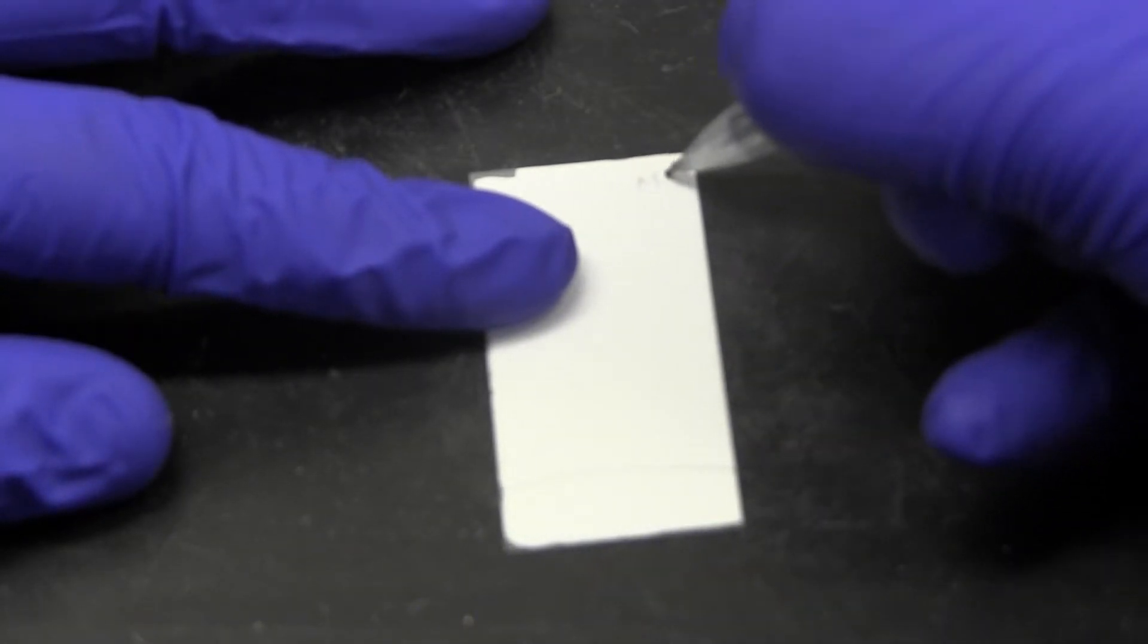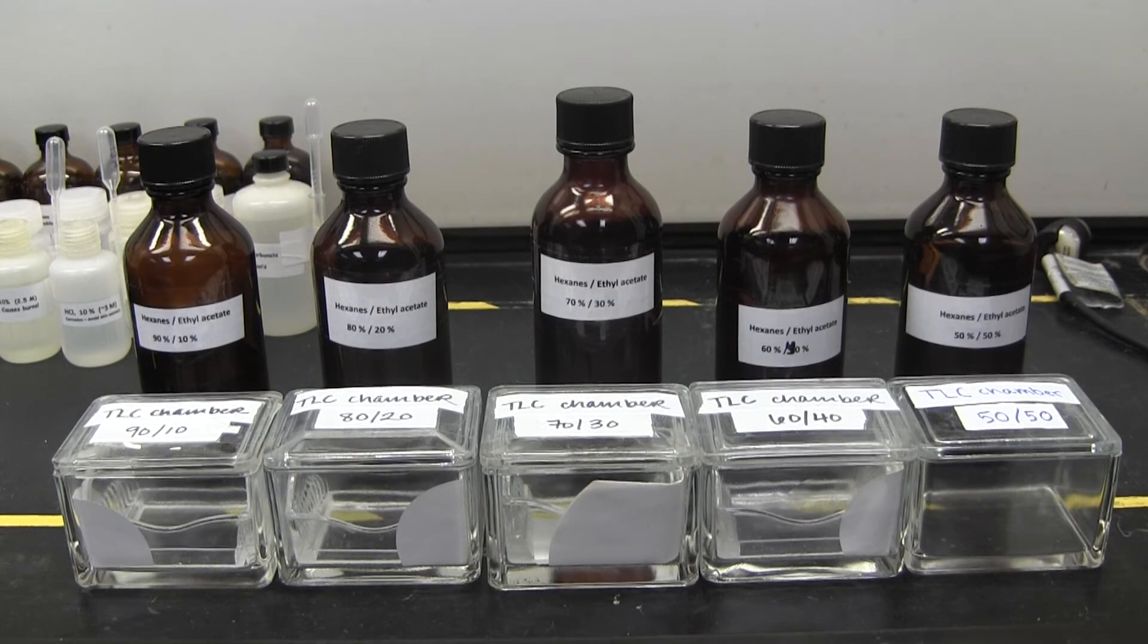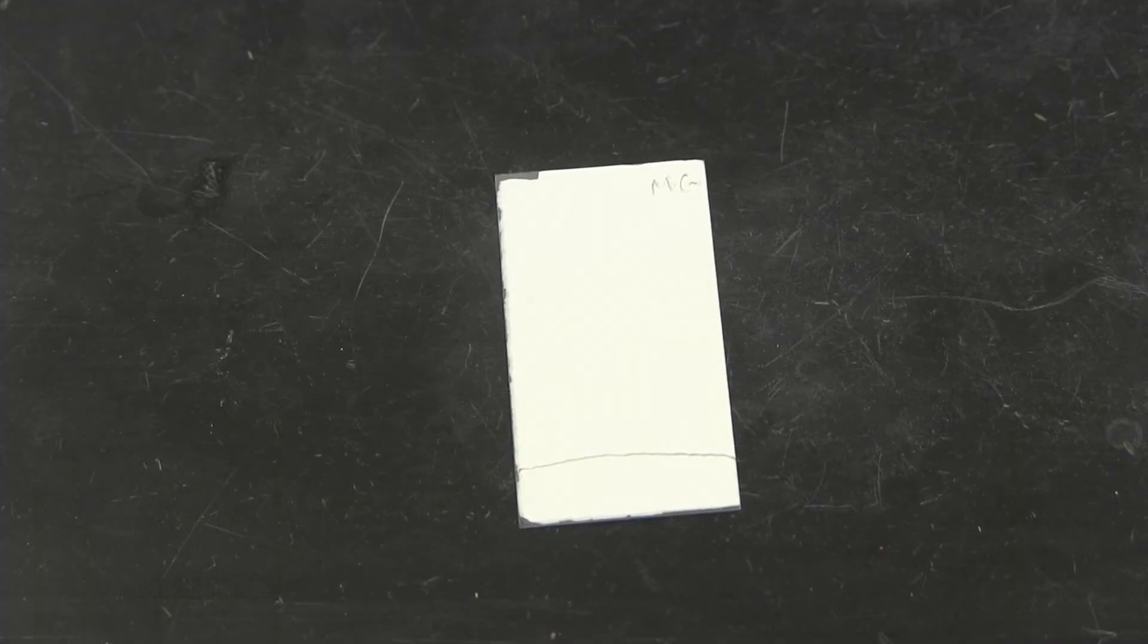Also, write your initials on the plate so you can identify which is your unknown. You will be testing many different solvent ratios of ethyl acetate and hexanes to determine which best separates your unknown. Use one plate for each solvent mixture you plan to test. We recommend having a classmate or two share a plate with you.